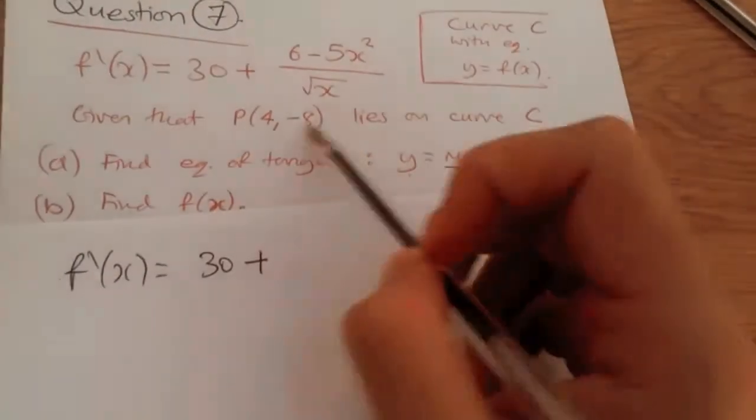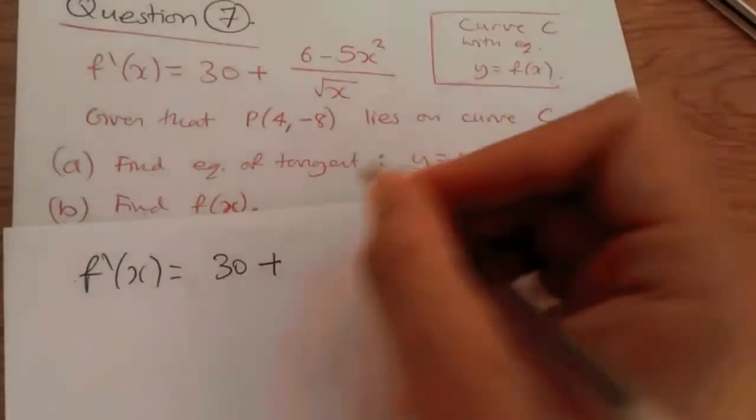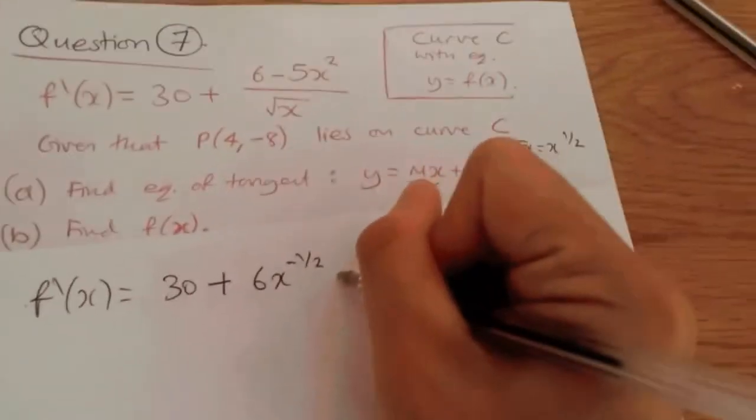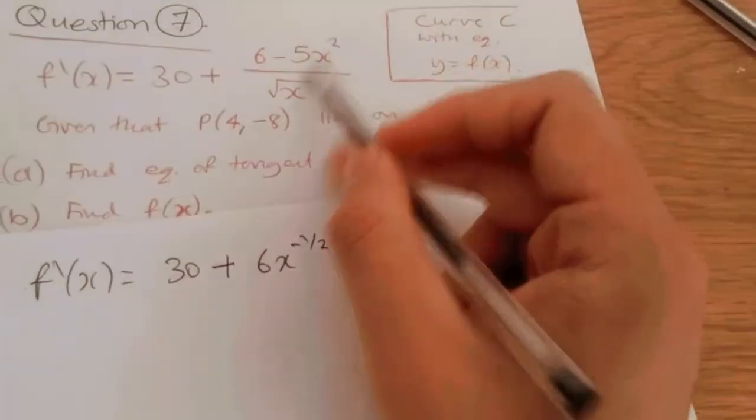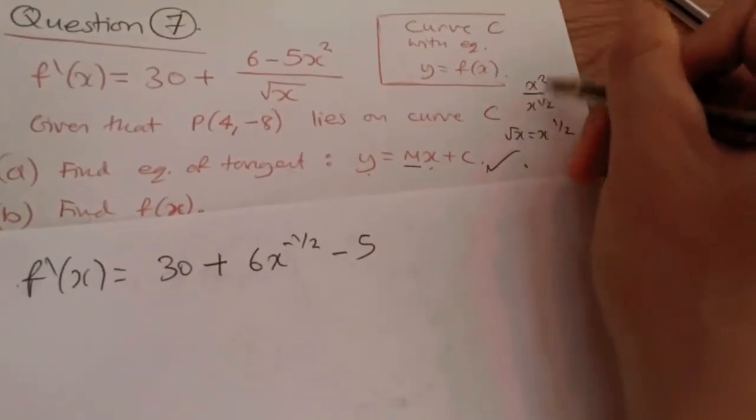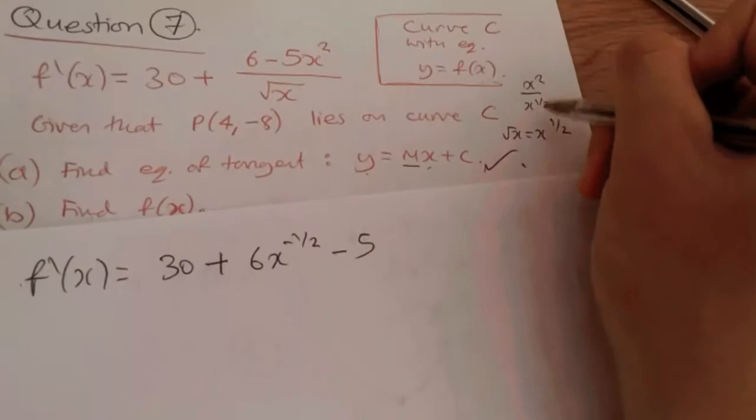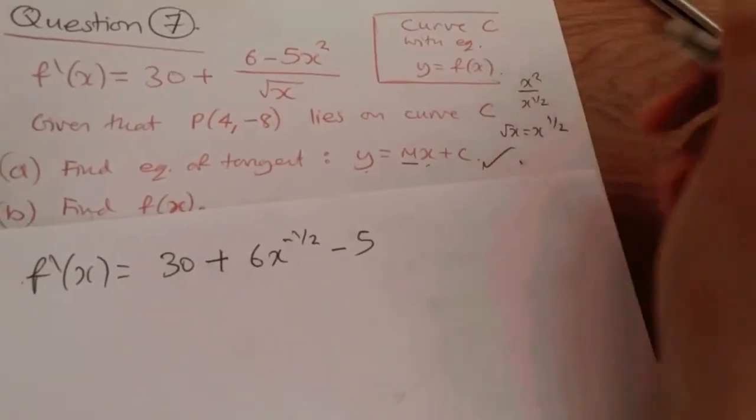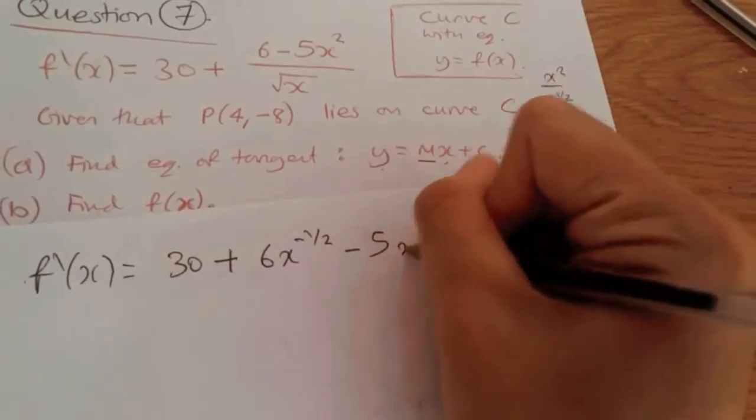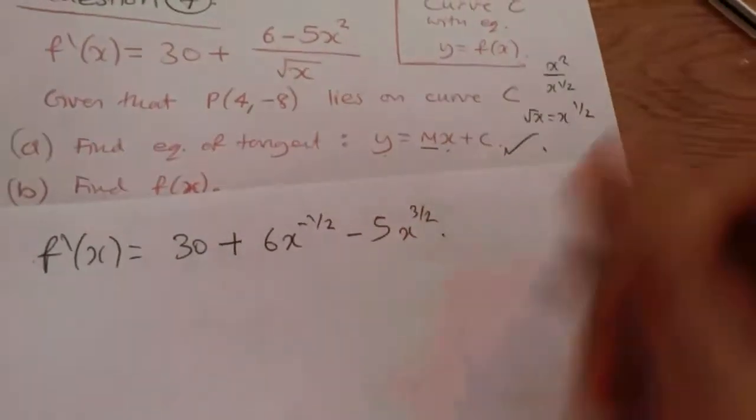So therefore, 6 over, if we're going to bring it back to the baseline, we're going to put a negative power. So it'll be 6x^(-1/2), minus 5. And again, x² over this, so it'll be x² over x^(1/2). When you're dividing powers, you end up subtracting the power. So this would be 2 take away half, which is 3 over 2. And that's it.